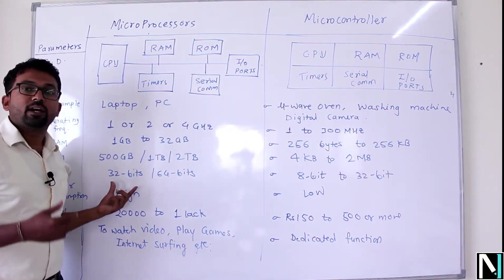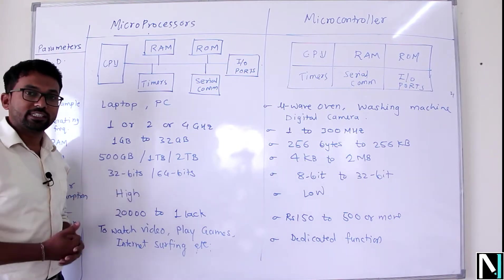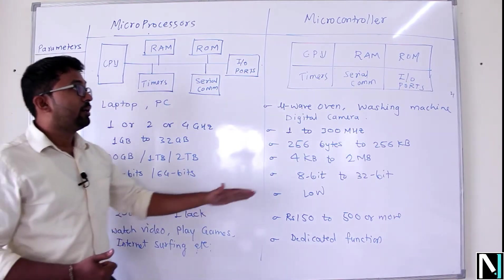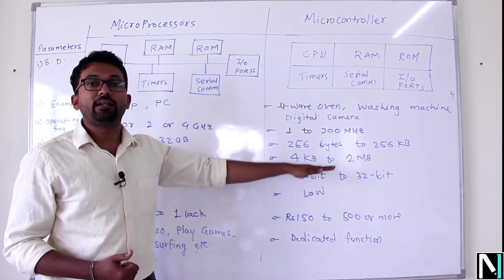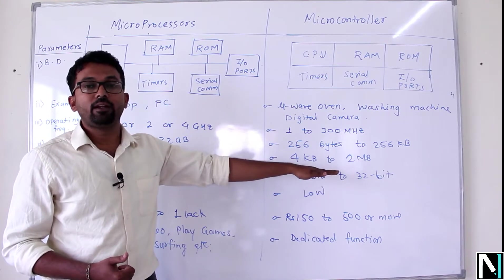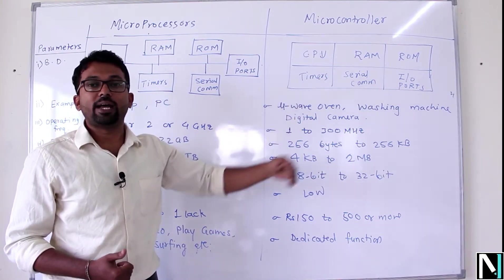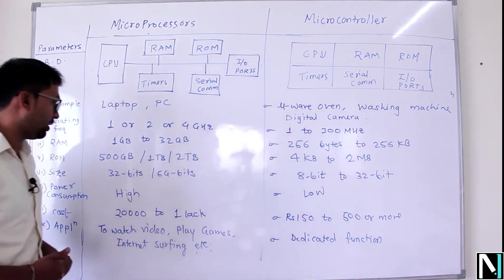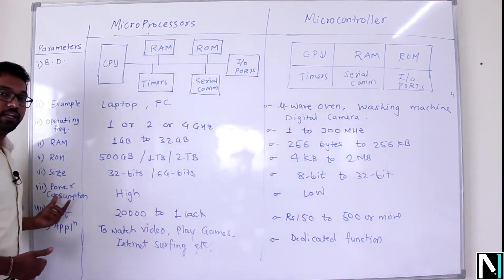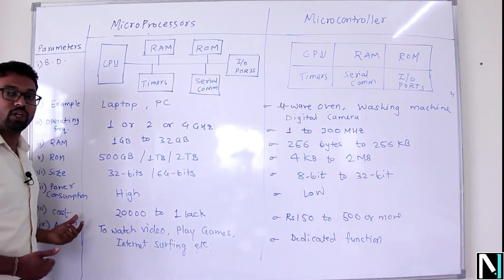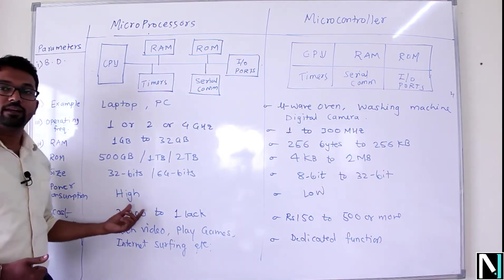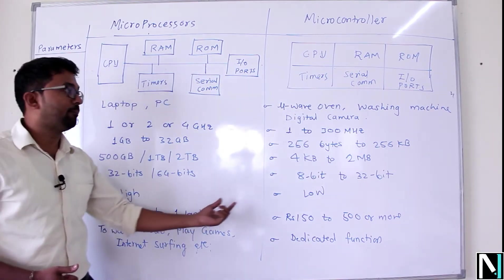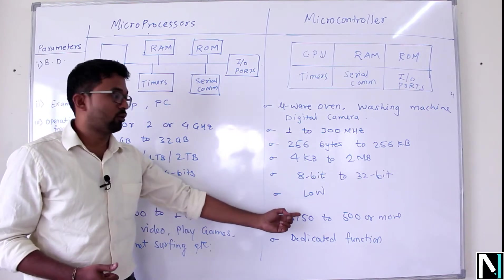Next is size — microprocessor based systems are 32-bit or 64-bit processors, but microcontrollers start with 8-bit or 16-bit, with maximum up to 32-bit microcontrollers also available. Power consumption: obviously a microprocessor system will require more power compared to the microcontroller.